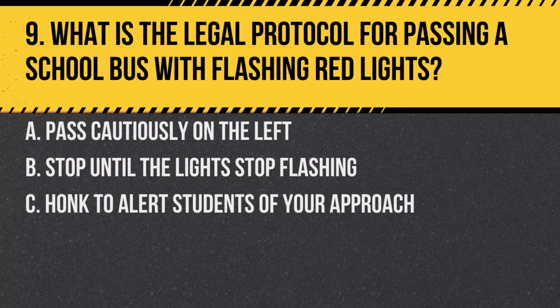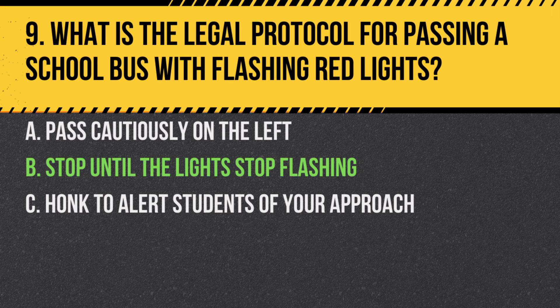Question 9. What is the legal protocol for passing a school bus with flashing red lights? A. Pass cautiously on the left. B. Stop until the lights stop flashing. C. Honk to alert students of your approach. Answer: B. Stop until the lights stop flashing. It's illegal to pass a school bus with flashing red lights, indicating children are boarding or alighting.